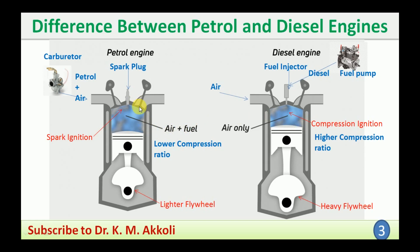Regarding power production, due to the lower compression ratio in the petrol engine, power production will be lower. In the diesel engine, due to the higher compression ratio, more air is available, more fuel can be burned, and since the fuel density per kg is more, more power is produced. The petrol engine has a lighter flywheel due to lower power production, making the engine lighter overall. The diesel engine uses a heavy flywheel and has a heavier engine.